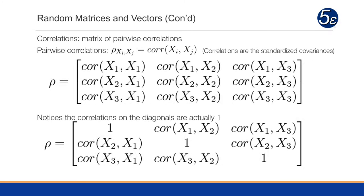From the covariance matrix, we can get a correlation matrix. If we take the correlation between each one of the variables, we'll notice that on the diagonal we end up with the correlation of the variable with itself, which we know to be one. So the diagonals are one, and everything else will be the correlation between the pairwise variables.